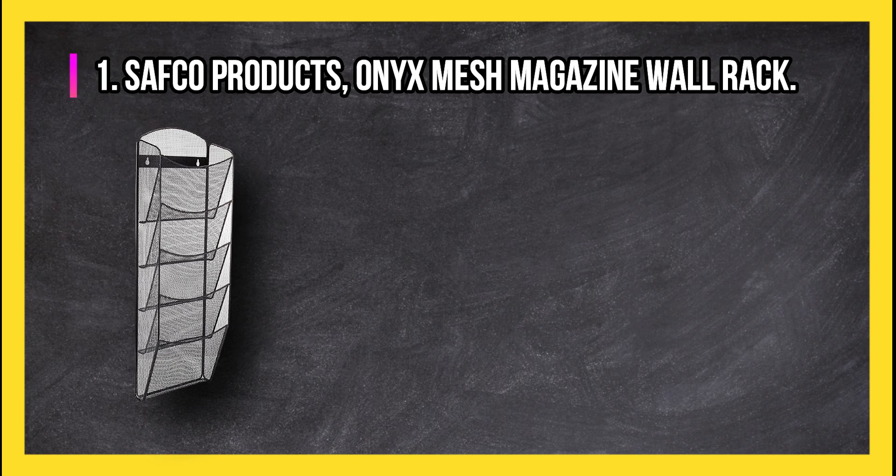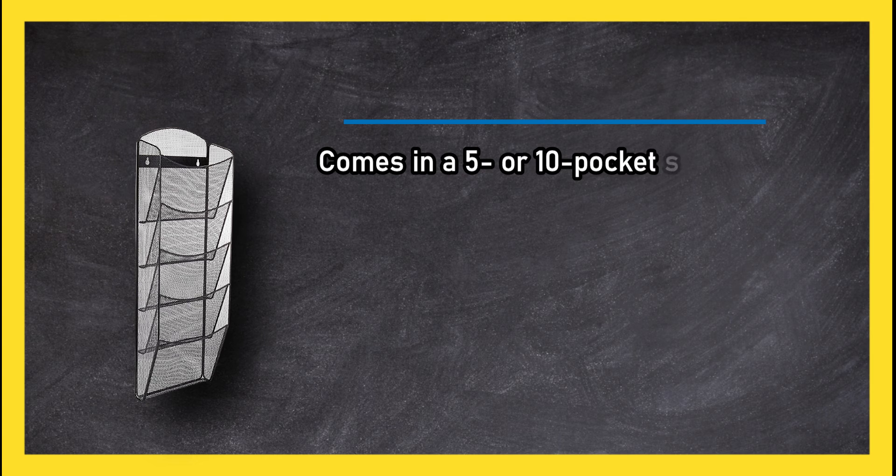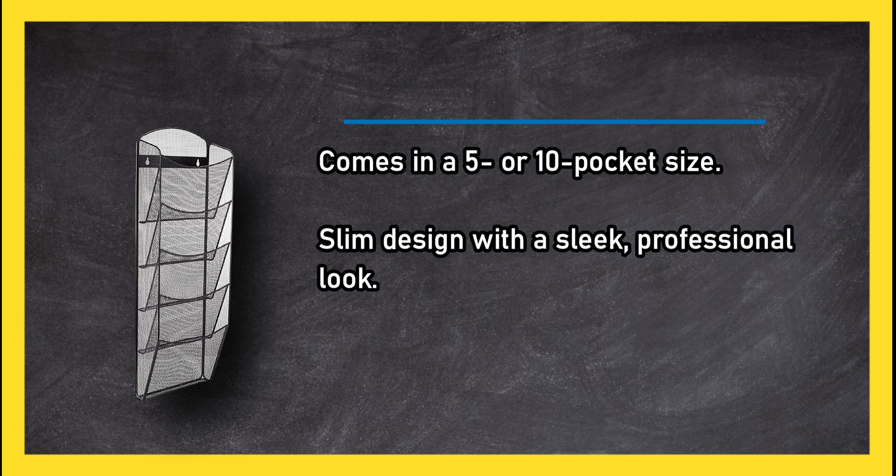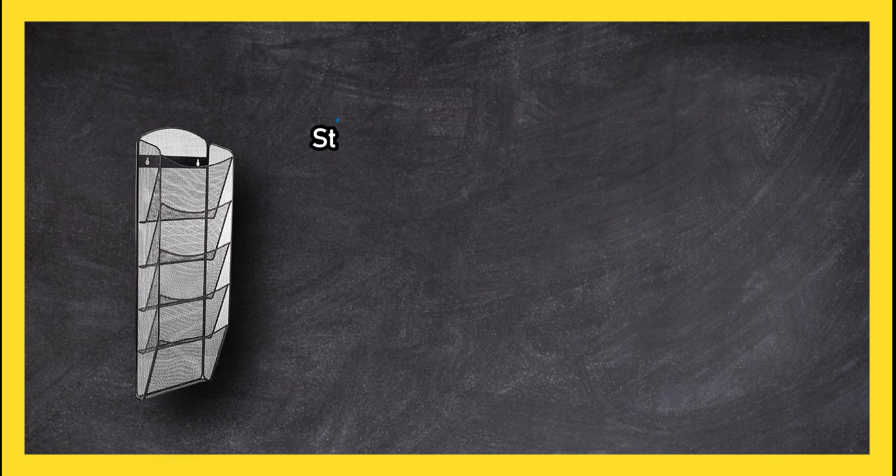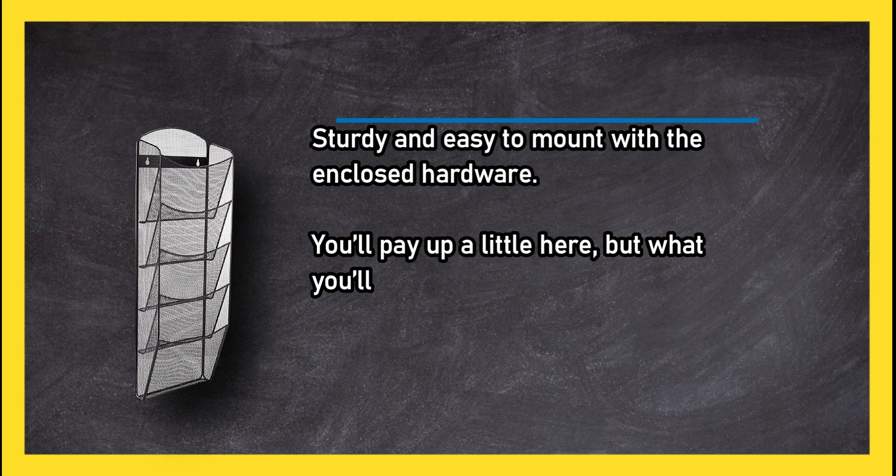At number 1: Safco Products Onyx Mesh Magazine Wall Rack. Comes in a 5 or 10 pocket size, slim design with a sleek professional look. Sturdy and easy to mount with the enclosed hardware. You'll pay up a little here, but what you'll get is a high quality professional looking rack that displays your magazines instead of just storing them.